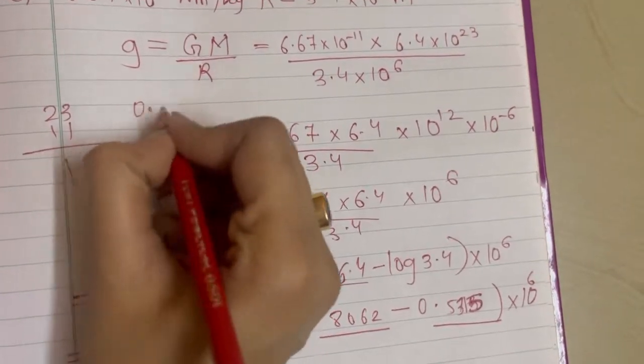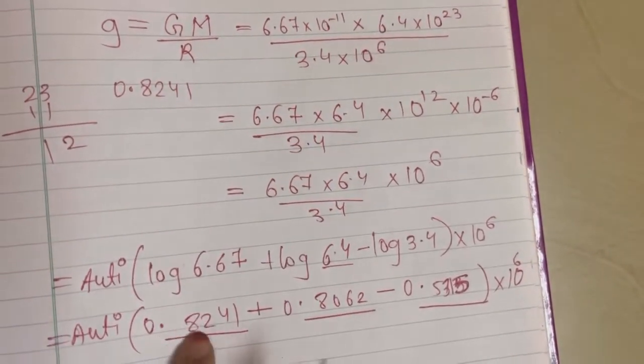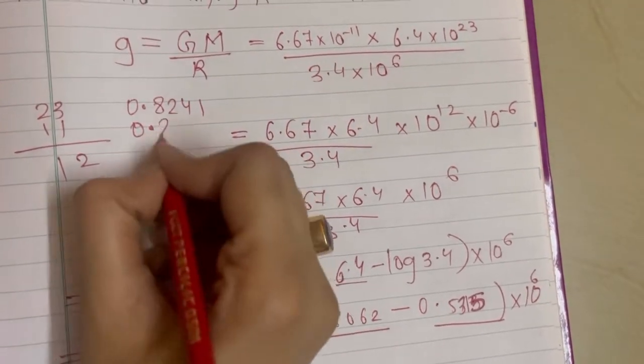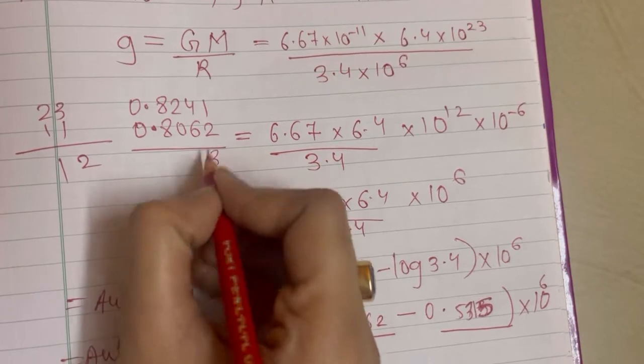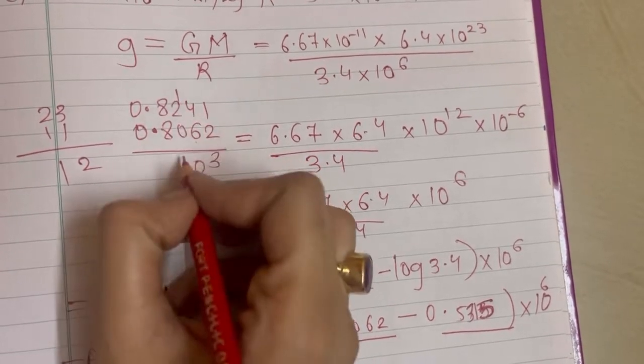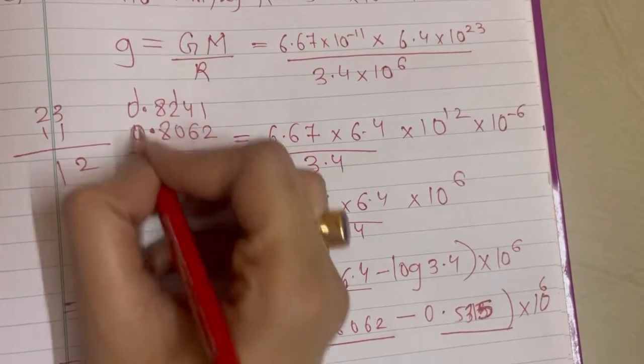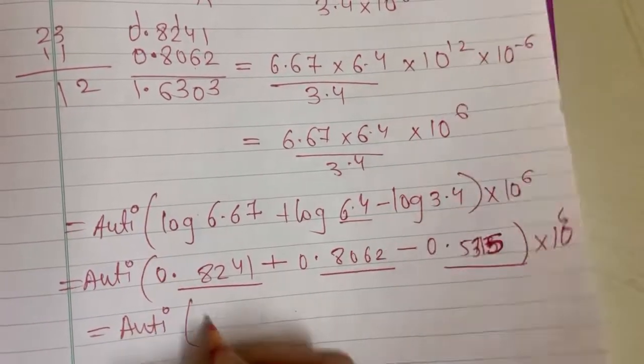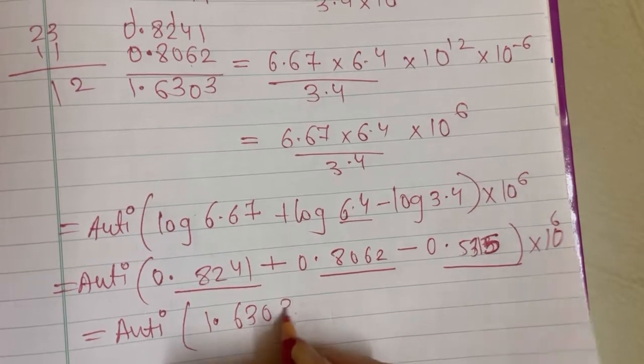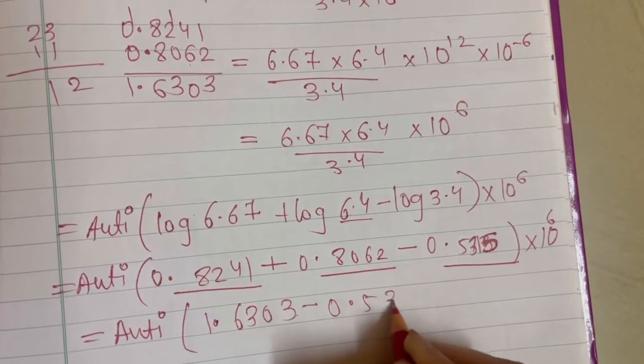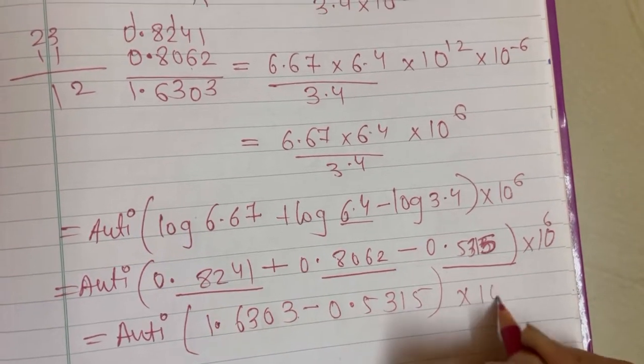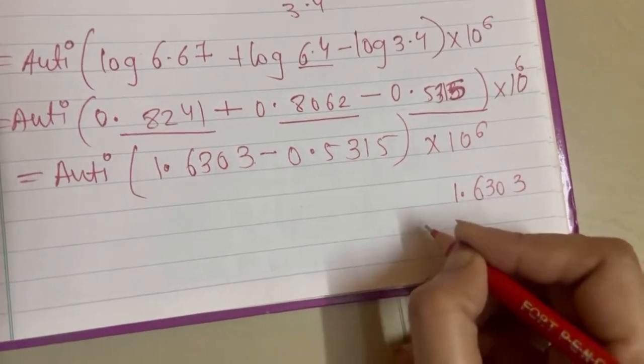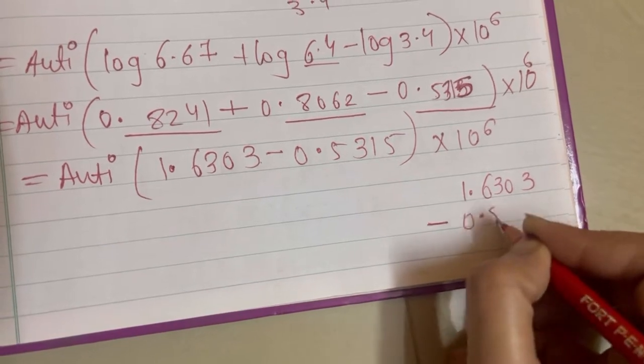Adding the first two: 0.8241 + 0.8062 = 1.6303. Now we subtract: antilog of (1.6303 - 0.5315) × 10⁶.